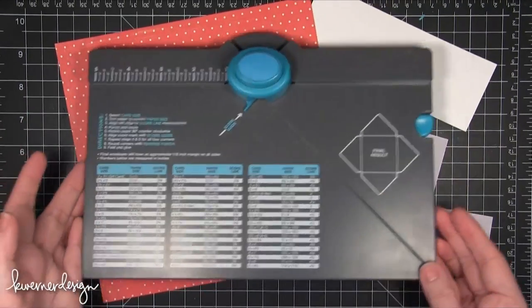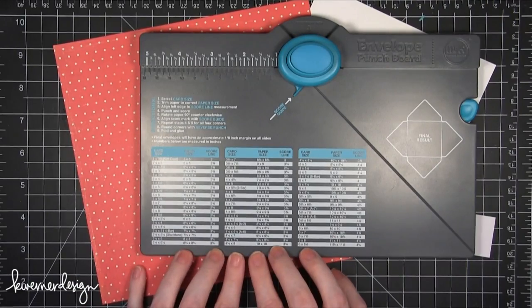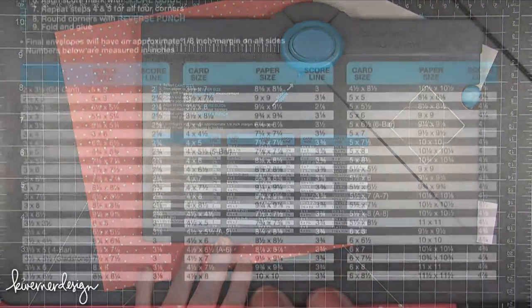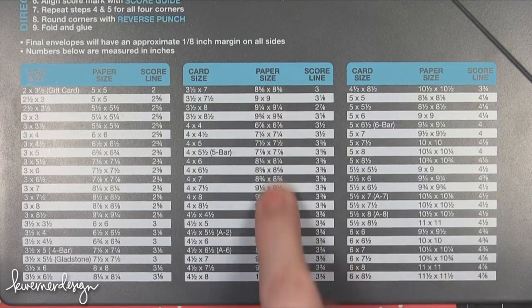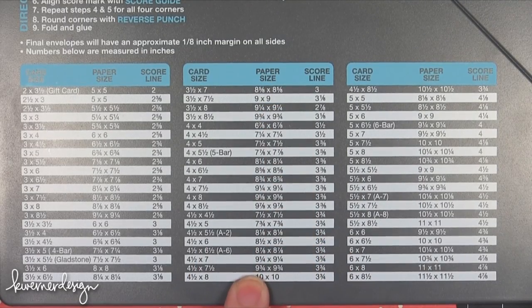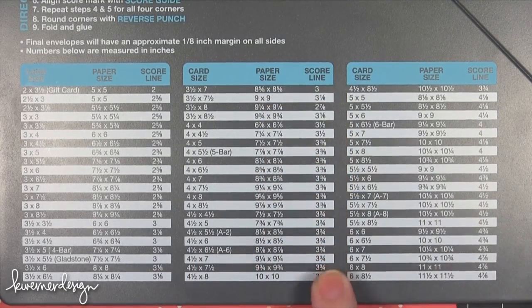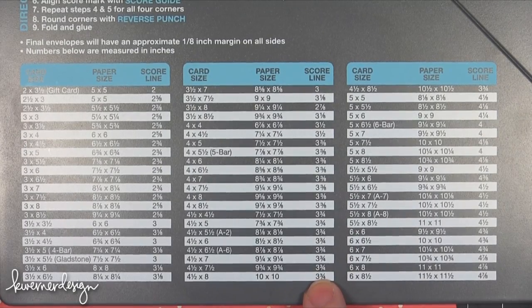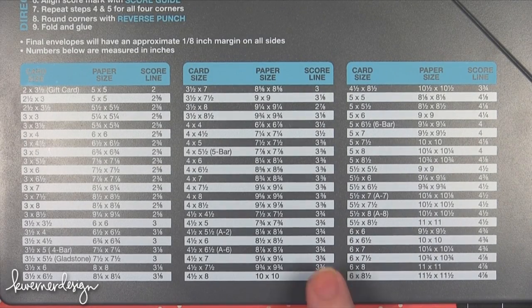The part that's kind of cool is that they have the measurements all on the board. I'm going to zoom in so you can see them. It tells you if your card is this size, this is the paper size that you'll cut to make the envelope and then this is the score line. You'll only use the score line measurement once and I'll show you that in a minute here.